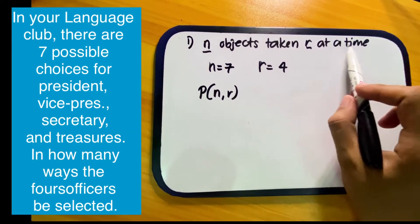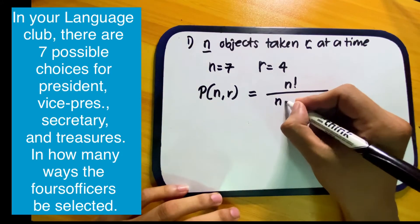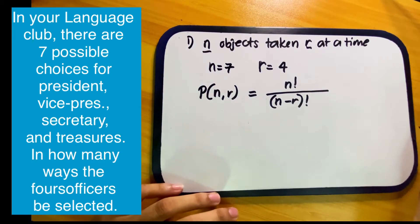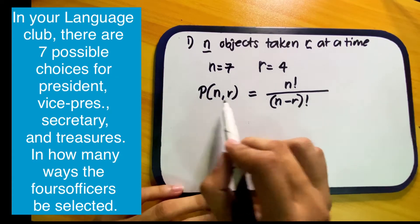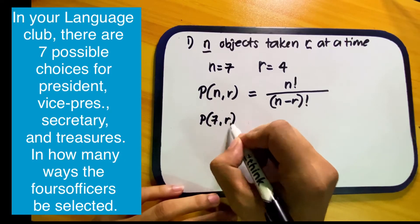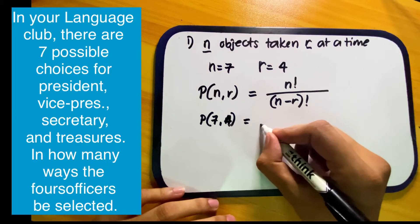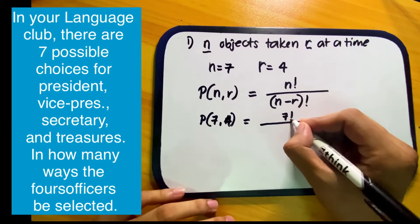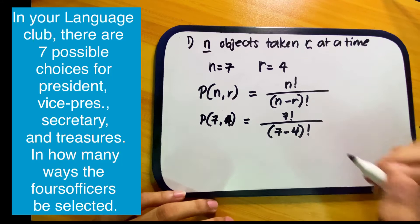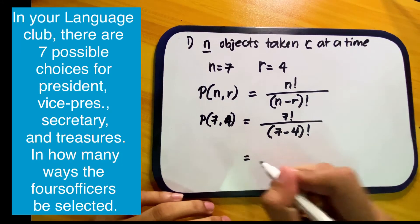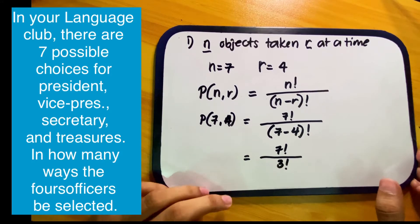We use the formula P(n, r) = n factorial over (n minus r) factorial. Since n equals seven and r equals four, we substitute: P(7, 4) = 7 factorial over (7 minus 4) factorial, which gives us 7 factorial over 3 factorial.